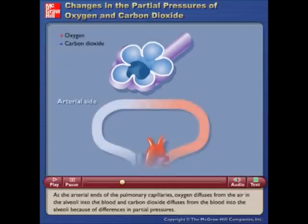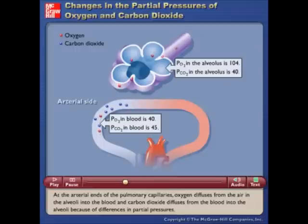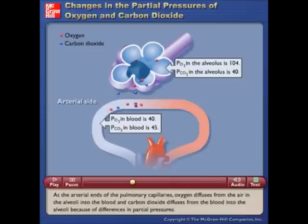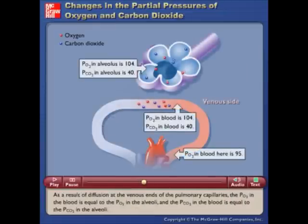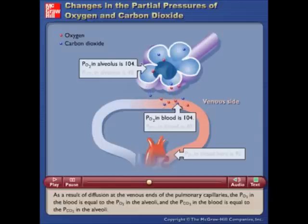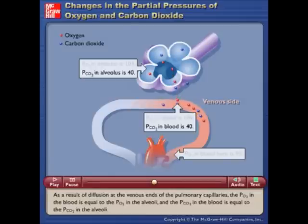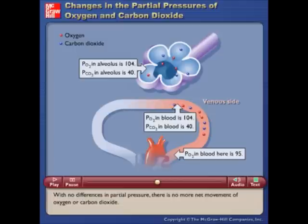At the arterial ends of the pulmonary capillaries, oxygen diffuses from the air in the alveoli into the blood, and carbon dioxide diffuses from the blood into the alveoli, because of differences in partial pressures. As a result of diffusion, at the venous ends of the pulmonary capillaries, the pO2 in the blood equals the pO2 in the alveoli, and the pCO2 in the blood equals the pCO2 in the alveoli. With no differences in partial pressure, there is no more net movement of oxygen or carbon dioxide.